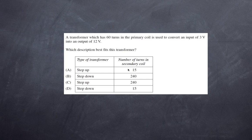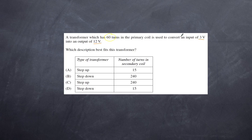The first question: a transformer which has 60 turns in the primary coil is used to convert an input of 3 volts into an output of 12 volts. Which description best fits this transformer? Since we've gone from 3 volts to 12 volts, this is a step-up transformer — that's what step-up transformers do, they increase the voltage.